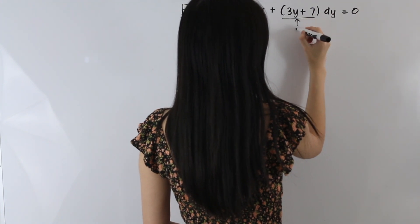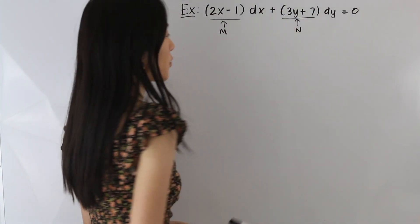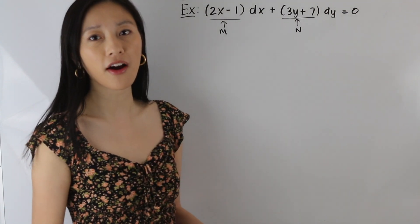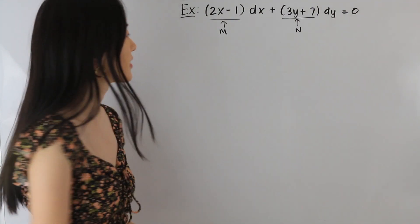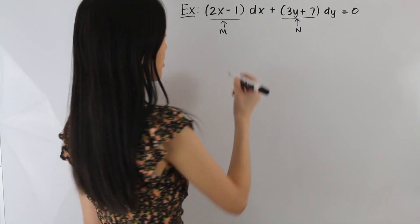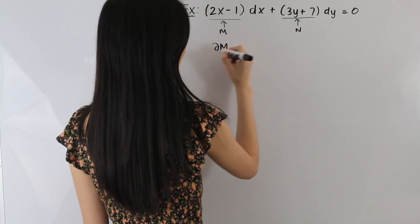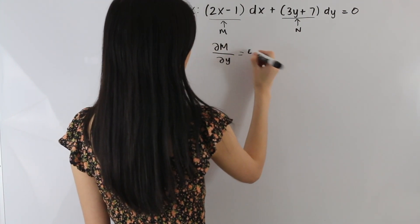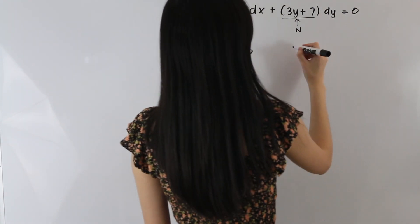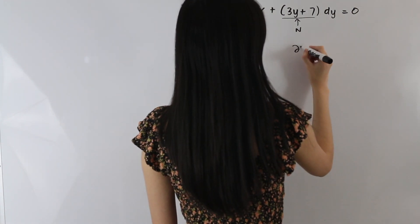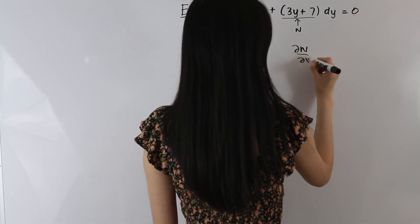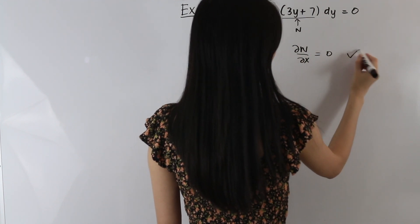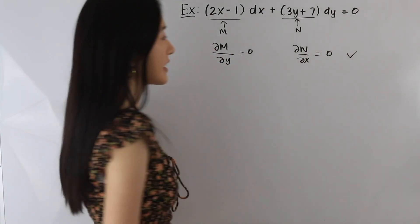We're going to take our partial derivatives to determine whether or not our differential equation is exact. First we take the partial derivative of M with respect to y, and that gives us 0. Then we take the partial derivative of N with respect to x, and that also gives us 0, so our differential equation is exact.